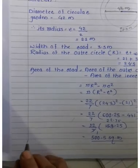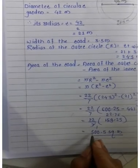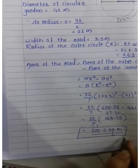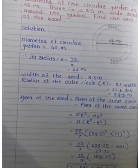Finally, we can write: the area of the road equals 500.5 square meters. Got it? Thank you.